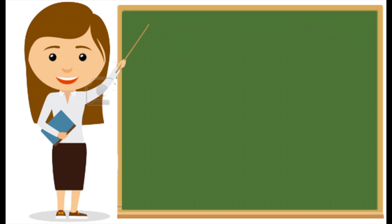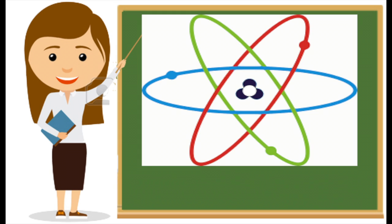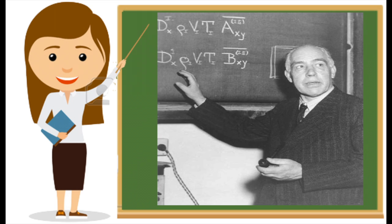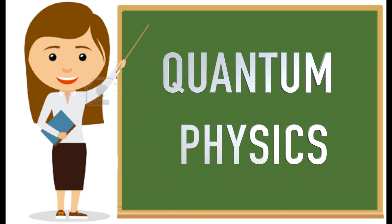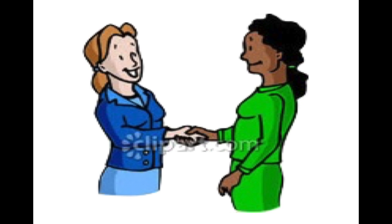This model helped scientists understand not only the theoretical appearance of an atom, but it also explained how the different elements in an atom combine. His model was recognized as one of the most successful discoveries in the 20th century and was also a major contribution to the development of quantum physics and modern theoretical physics. Professor Kim, can you please explain how Bohr's work was recognized as a successful discovery and what additional work he did besides creating the Bohr model?